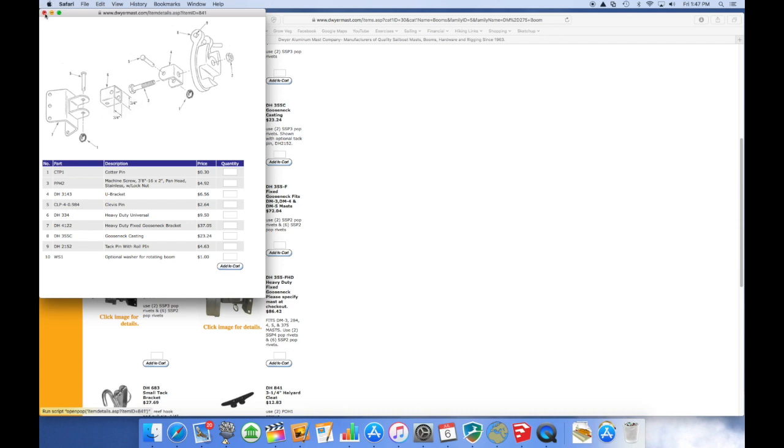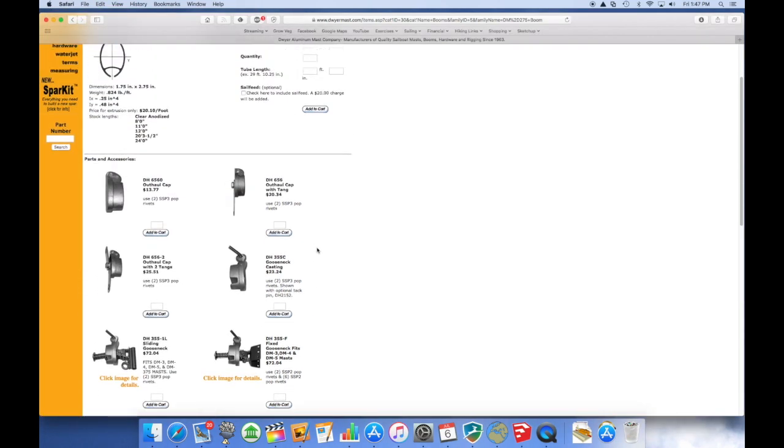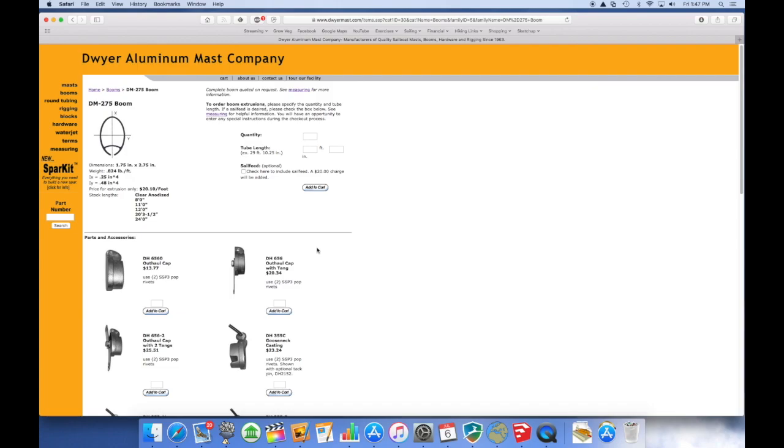So those are the items I ordered, and it's not really complicated to find them, but you just need to know where to look. So that'll wrap it up on the subject of the gooseneck for the Rhodes 22. Hope you found that useful or informative, and thanks for watching. See you next time.